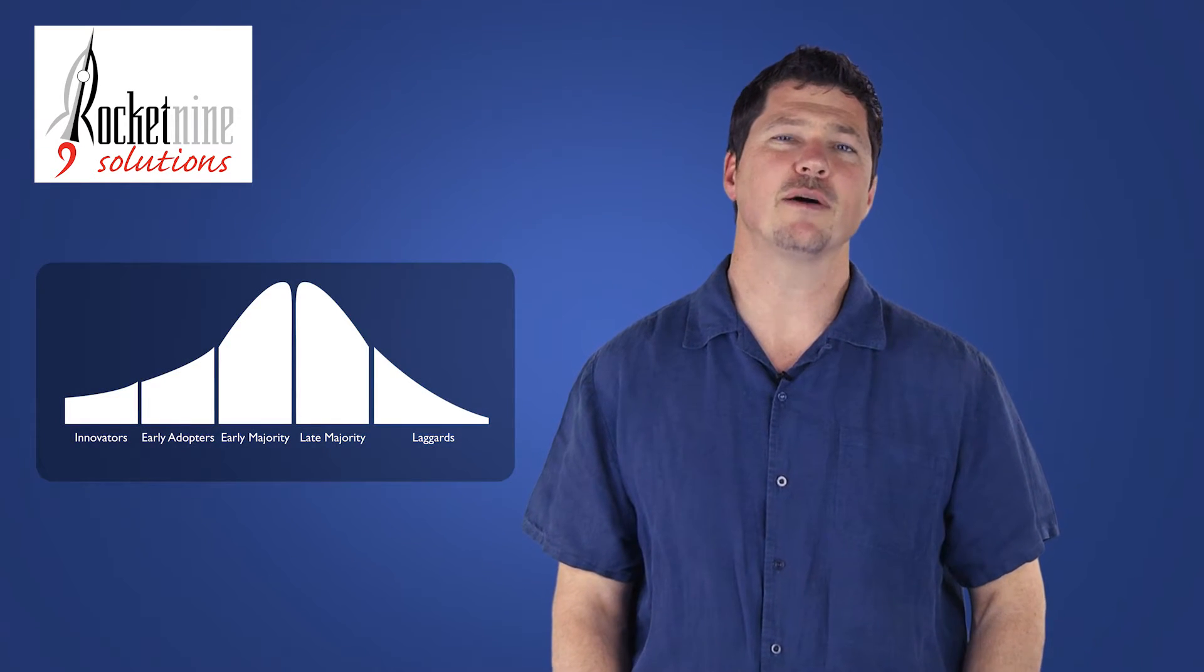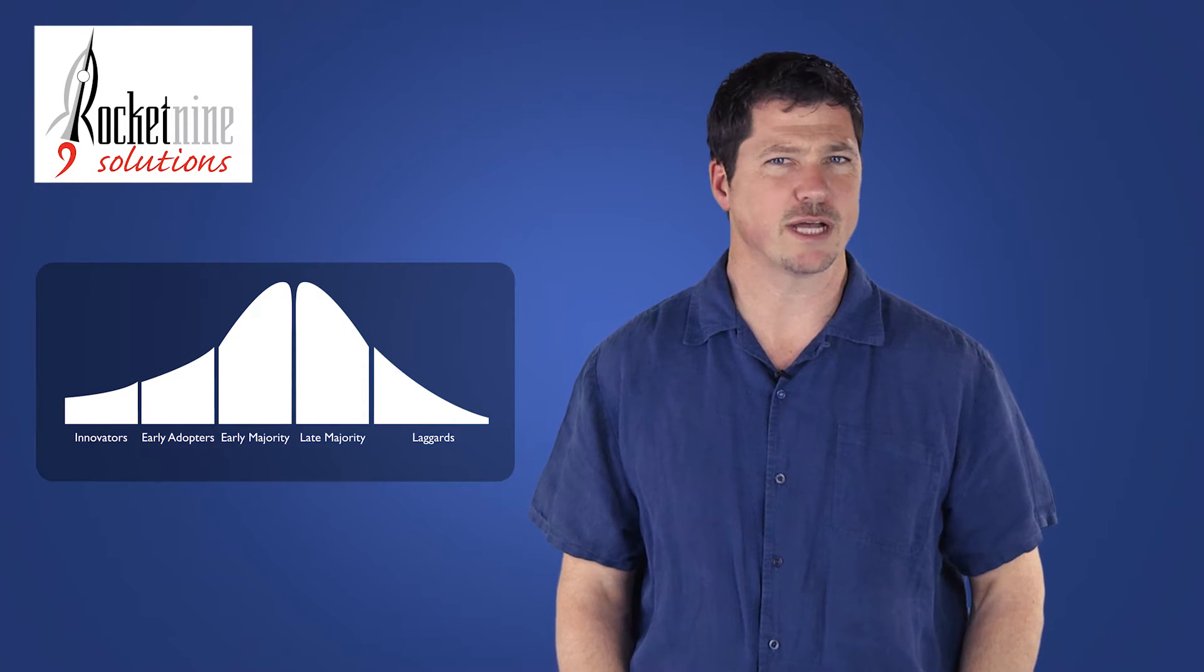It's called the Crossing the Chasm from Jeffrey Moore. And what it is is a very simple diagram, like a U-shaped curve, that divides up the folks that we deal with into several categories.